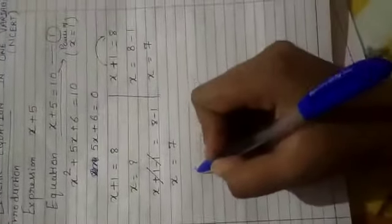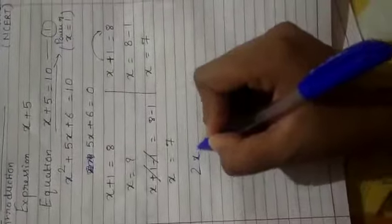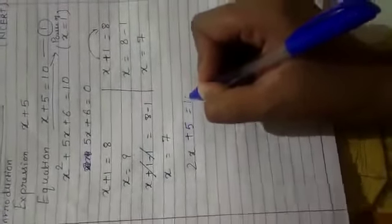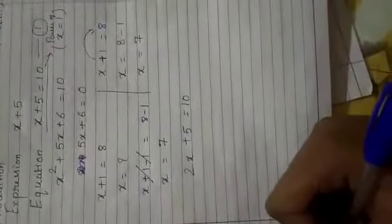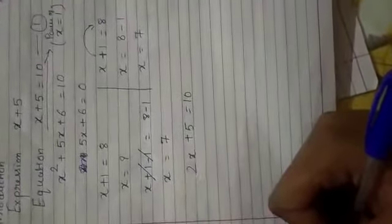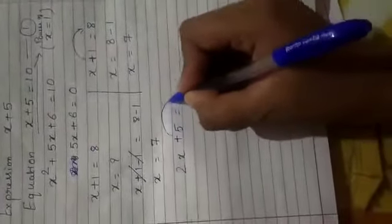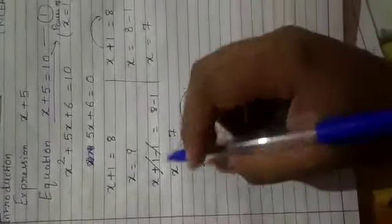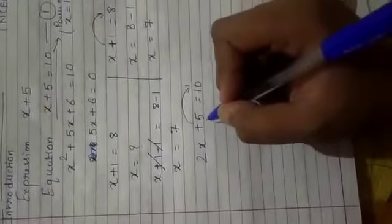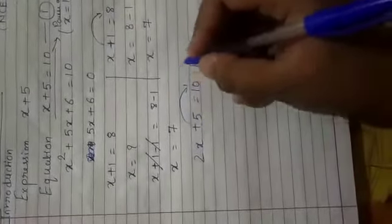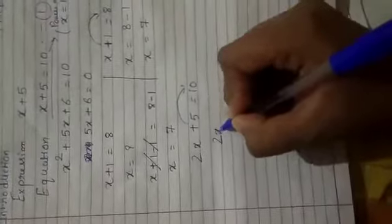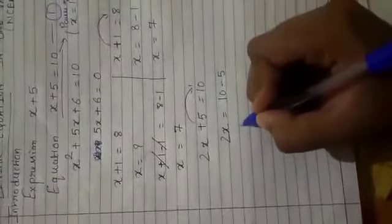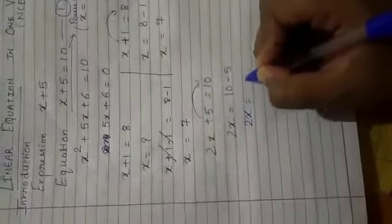Now suppose another example, 2x plus 5 equal to 10. Now what is this, plus 5. The method of transposition is easy. So you have to do, plus 5 goes to minus, step by step. 10 minus 5, so 10 minus 5 will be 5.